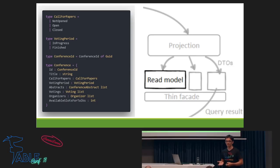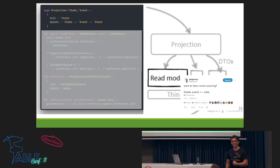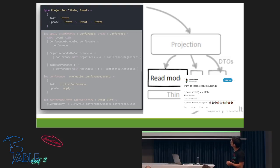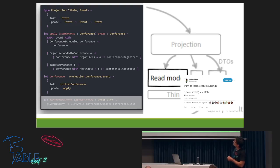How can we get this out of the events? We use projections. A projection is a record with two parts: an initial state and an update function. The update function is just a function from state and event to state. Does this look familiar? That's it — that's what Greg Young was talking about. We take the information out and give back some new state. If we have a specific projection for this conference, the state is the conference type, the event is the event type, init gives us the initial conference, and the update is an apply function.